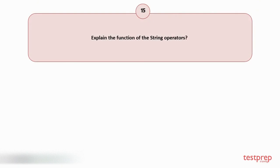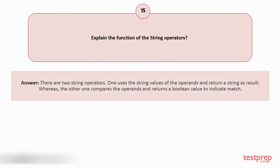Question number 15: Explain the function of the string operators? There are two string operators. One uses the string values of the operands and returns a string as result, whereas the other one compares the operands and returns a boolean value to indicate a match.